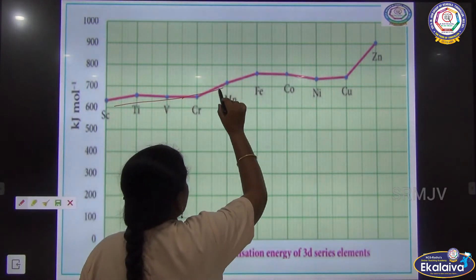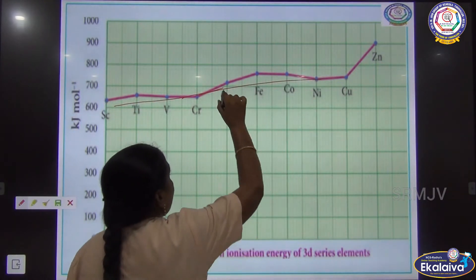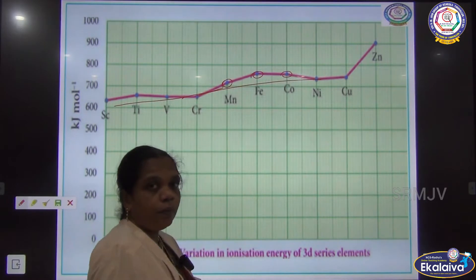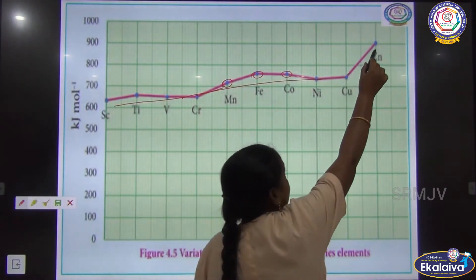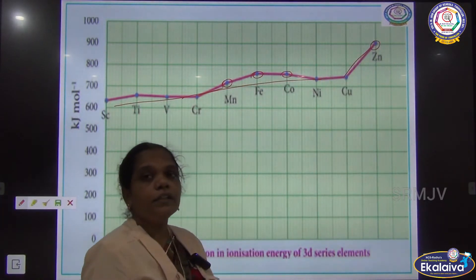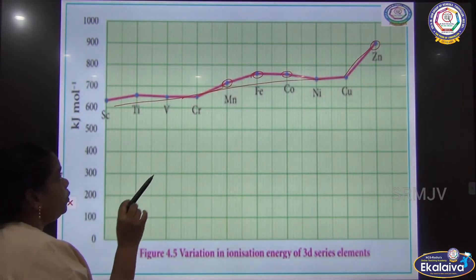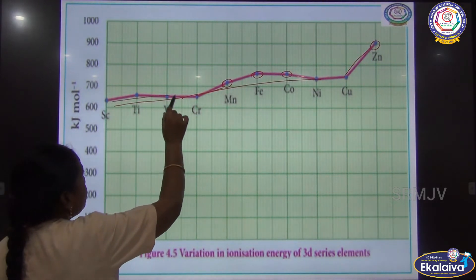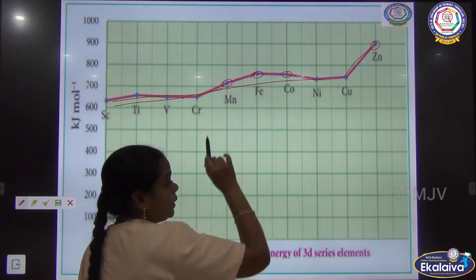But there is an abnormal variation. If the steady increase were maintained, it should follow a regular pattern. However, there is an abnormal variation in the increase in ionization energy. You can see a very steep increase in the ionization energy of zinc in this comparison of the 3D series from scandium to zinc. From scandium to chromium there is a steady increase, but then there is an abnormality because of manganese.